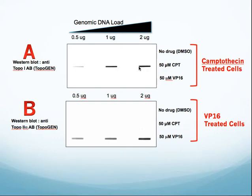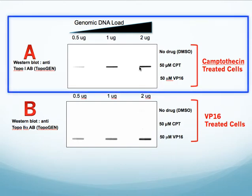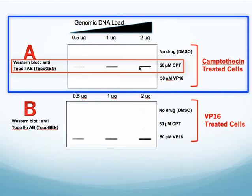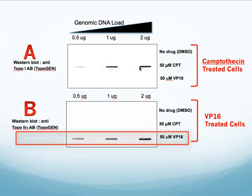Here you can see some actual results. In this case, we took cells and treated them with camptothecin and 50 micromolar VP16. That's shown in a blot in panel A. Again, you expect to see a topo-1 signal coming up when probed with a topo-1 antibody. In blot B, you can see that we picked up a topo-2 signal only in VP16 treated cells. This Western blot was probed with a topo-2 antibody.